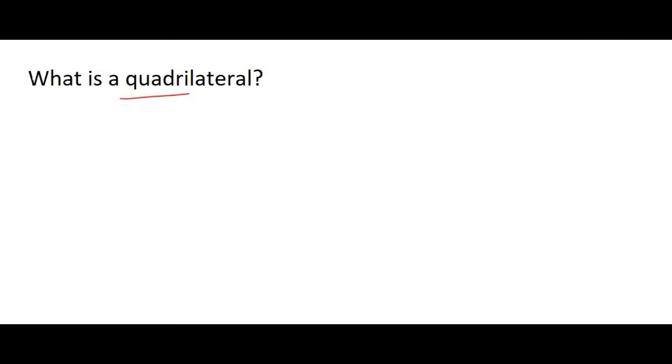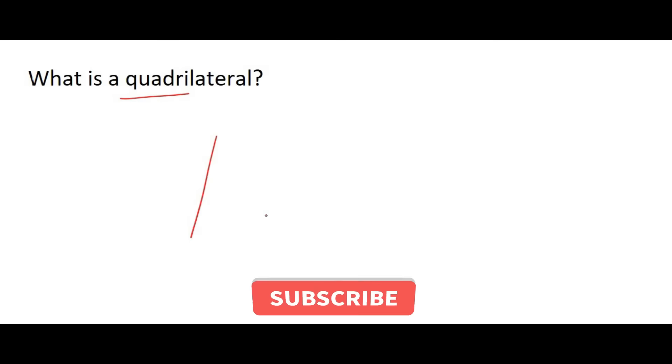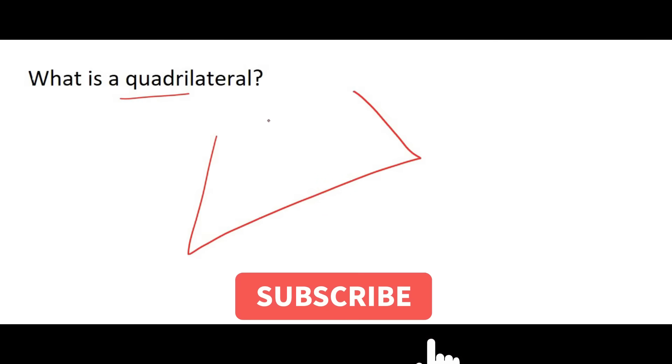Hello everyone. In this lesson we're going to start with quadrilaterals. Have you ever driven a quad bike? Well a quad bike has four wheels, and so a quadrilateral is any shape that has four sides.